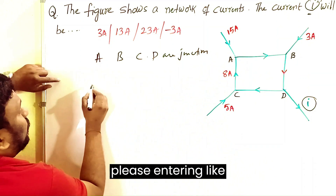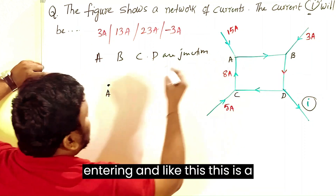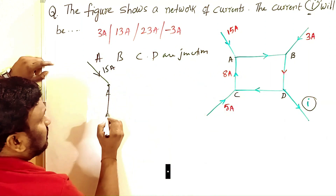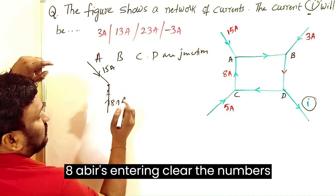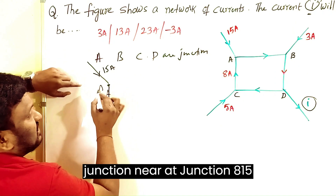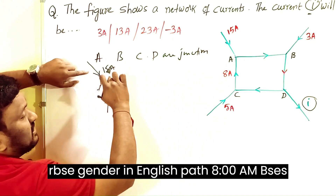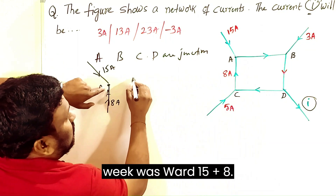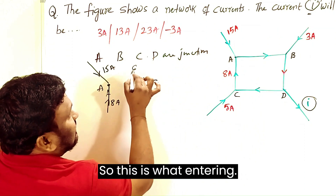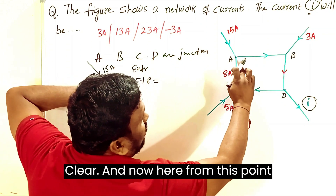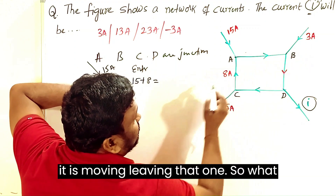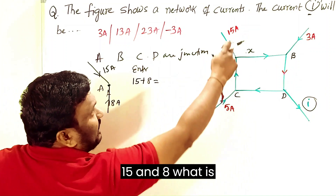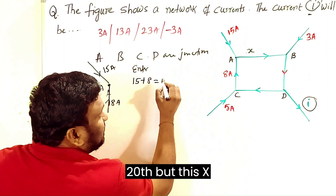At junction A, observe what is entering: 15 amperes is entering in one path and 8 amperes is entering in another path. So at junction A, 15 amperes and 8 amperes are entering. The amount of current entering should equal what is leaving. Let's call the leaving current X — 15 plus 8 equals 23, so X is 23 amperes.